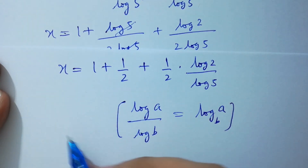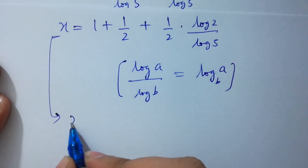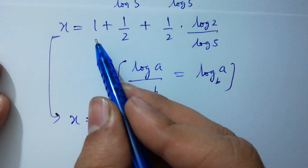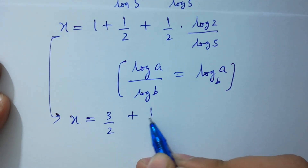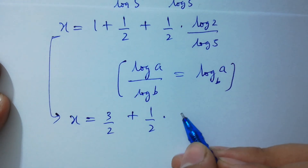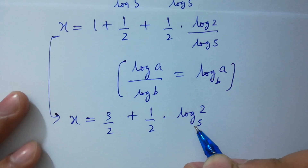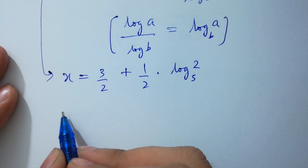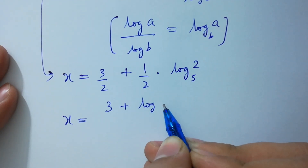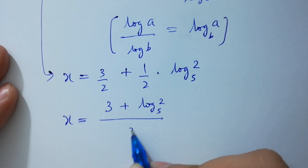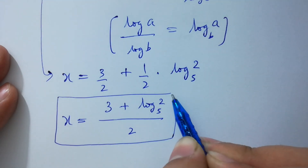Since log a over log b equals log a to the base b, we get x equals 1 plus one half plus one half log 2 to the base 5, which simplifies to x equals 3 plus log 2 to the base 5, over 2. This is our final value of x.